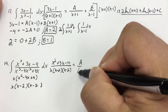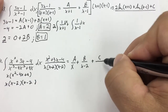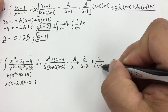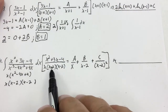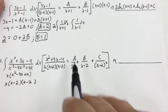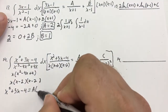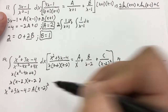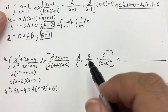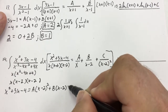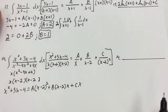That's going to equal A over x, plus B over (x − 2), plus C over (x − 2)². Because it's a repeated factor, I need that extra term. I'm going to cross-multiply by x(x − 2)², so x² + 3x − 4 equals A(x − 2)² plus B·x(x − 2) plus C·x.